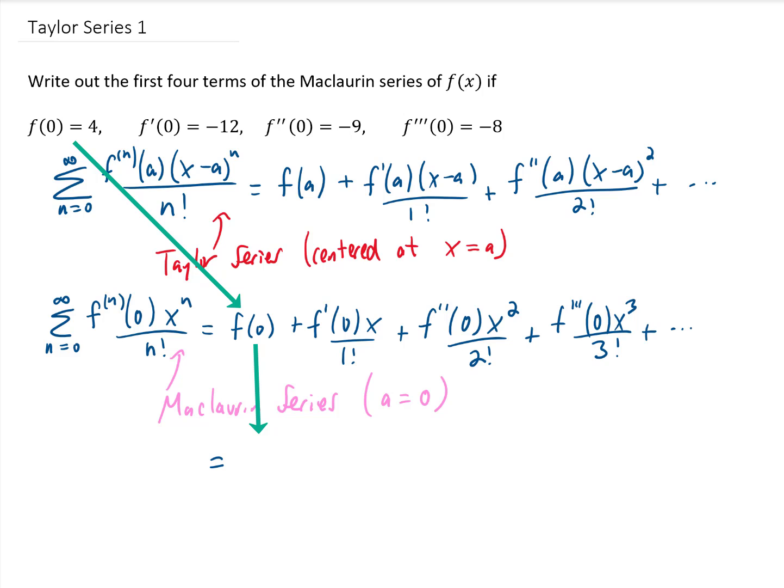We're just going to replace f of 0 with 4, f prime of 0 with negative 12, f double prime of 0 with negative 9, and f triple prime of 0 with negative 8. Then all we need to do to finish this problem up is simplify.